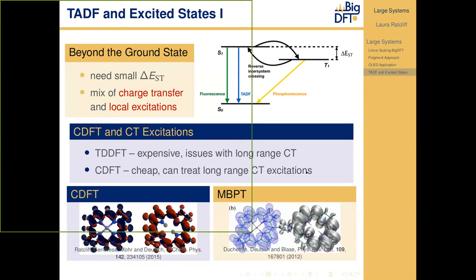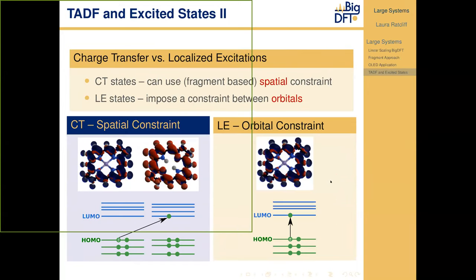The typical method used to calculate excited states is TDDFT, but this can be relatively expensive for large systems and has issues with long-range charge transfer states — a well-known problem which can be partially fixed by using range-separated hybrid functionals, adding extra cost and parameters. Instead, we are interested in using constrained DFT, which has much lower cost than TDDFT and is known to treat long-range charge transfer excitations well. Qualitatively, the charge transfer state from constrained DFT looks very similar to what we would get from many-body perturbation theory.